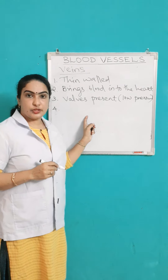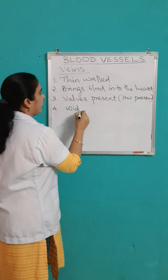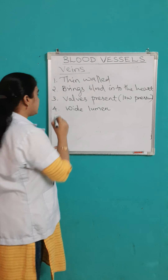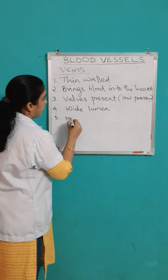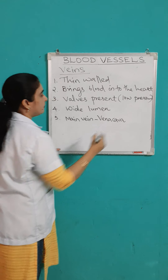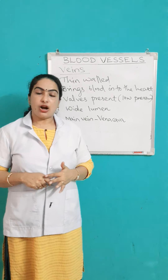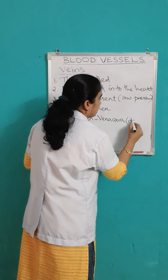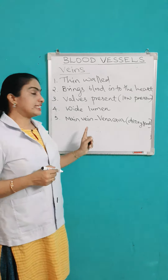In case of lumen — lumen means the cavity or space inside the blood vessel — the lumen is wide. Wide lumen is there in case of veins. The main vein is known as vena cava. Normally, veins carry deoxygenated blood. As arteries carry oxygenated blood, veins carry deoxygenated blood.